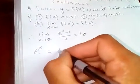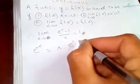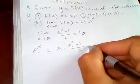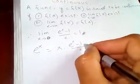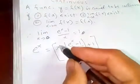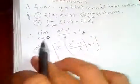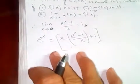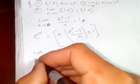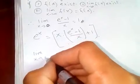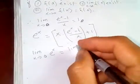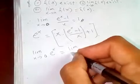We can write the limit as x tends to a of e to the x minus one times one over x, plus one. If you cancel the terms, we can do so. Taking the limit as x tends to zero of e to the x, and from the properties of limits applying them as x tends to zero.